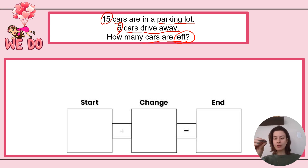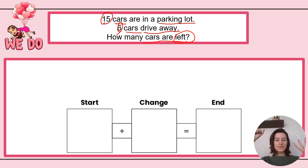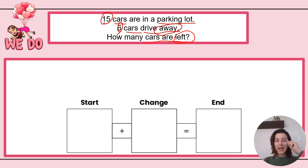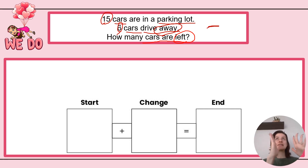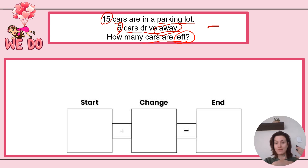Let's look further into this story problem. I'm going to visualize: I have 15 cars in a parking lot — six of them want to go to Dairy Queen, so they drive away. How many cars are left? The words "away" and "left" are huge indicators here. When I look at "away" and "left" I know that I am probably subtracting. I know I'm subtracting because if I have 15 cars and six drive away, I'm not going to add six more cars — the cars drove away. So I need to subtract to figure out how many cars are left.